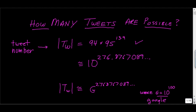You can rewrite this in scientific notation. The number of tweets is equal to 270 times 10 to the 276.8767 and so forth — around 10 to the 277th power.